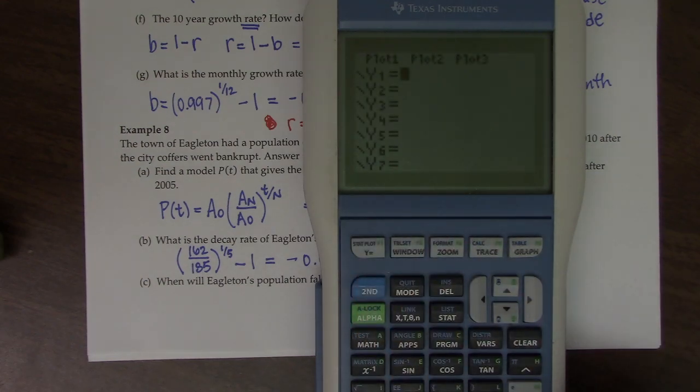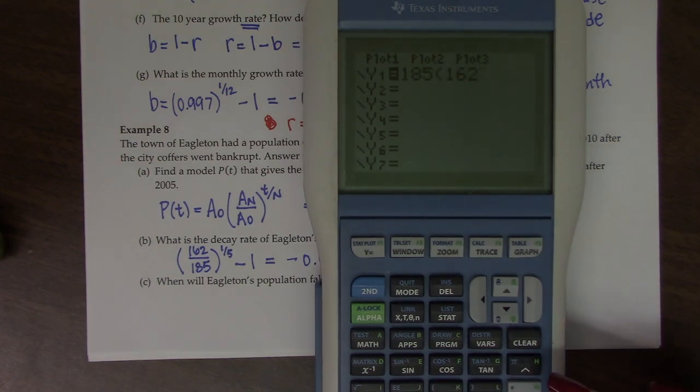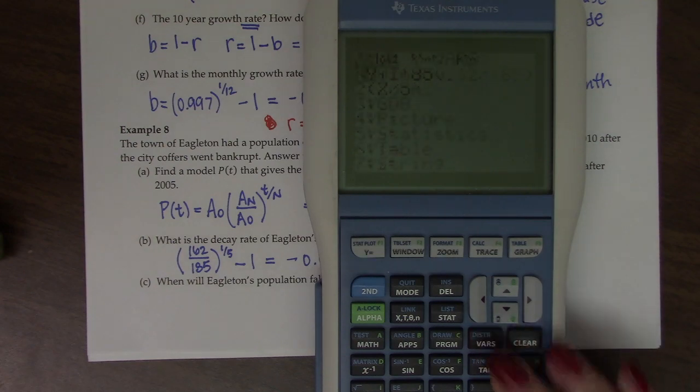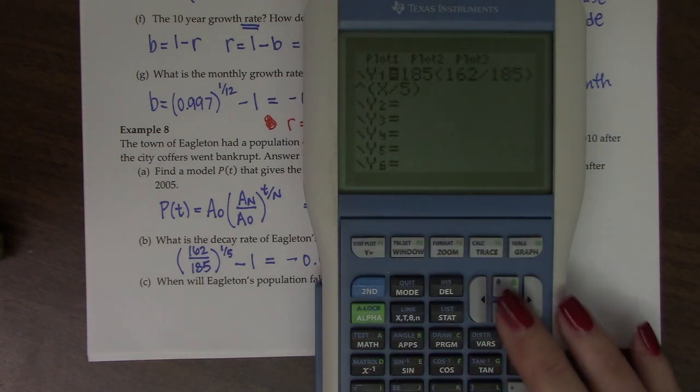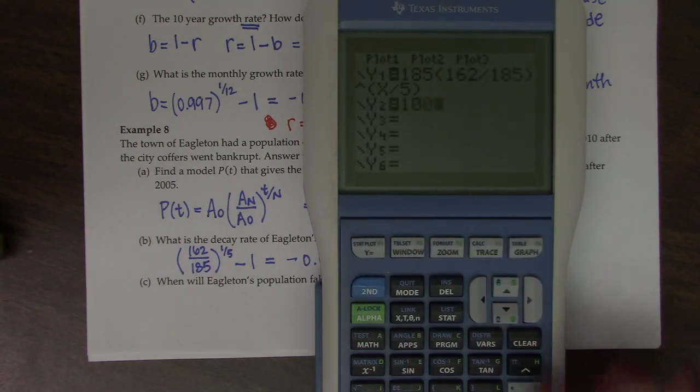So my model is 185 times 162 divided by 185 raised to the t over 5. And then I want to, back to y equals. Then I want to set this equal to 100.